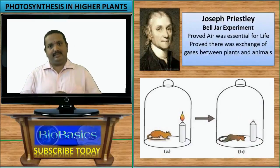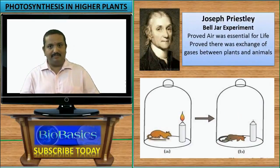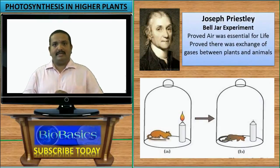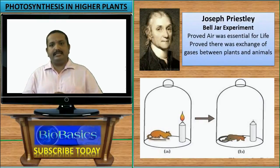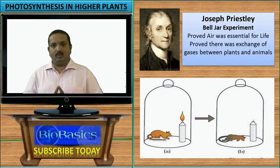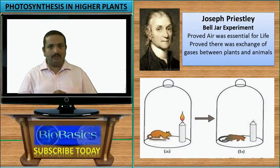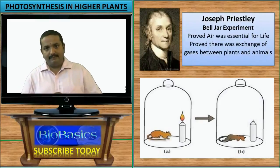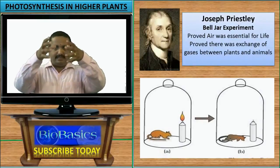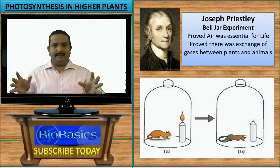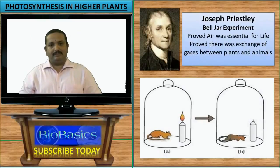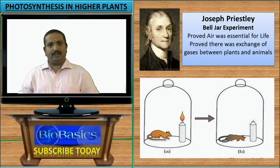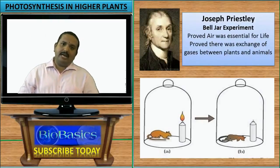In 1770, one of the earliest experiments that paved the road for understanding photosynthesis was done by scientist Joseph Priestley. Priestley's experiments involved studying the role of air in sustaining life. He took a mouse and a lit candle and placed them both inside a large bell jar — a big glass jar with no opening, an isolated system. After some time, the candle was extinguished and shortly thereafter the mouse also suffocated and died.